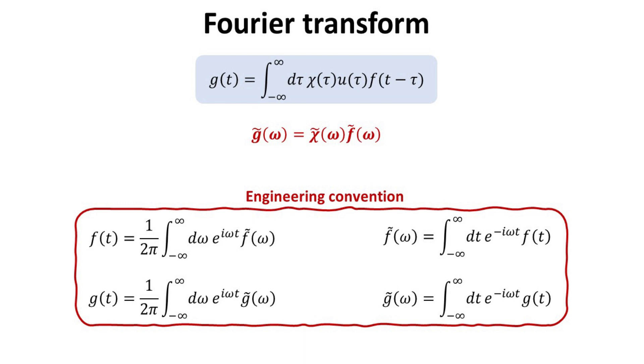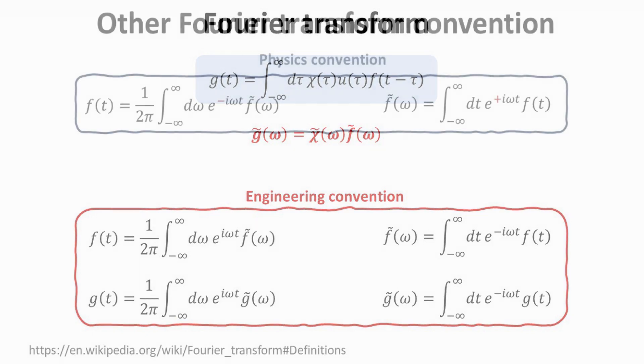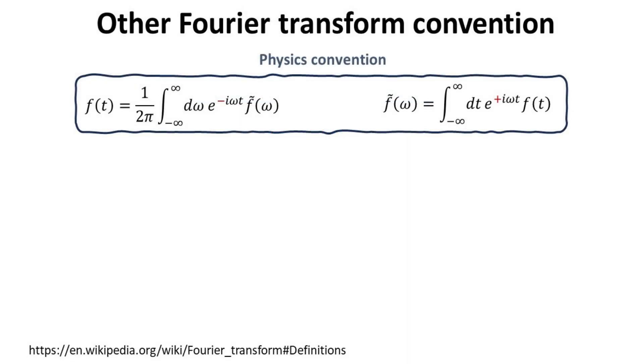Here in this video, we denote the Fourier transformed functions with a tilde, and their Fourier transformed pairs are defined as follows. We note, however, there are alternative definitions of the Fourier transform pairs. Common in physics, the sign of the exponent in the Fourier kernel is flipped. We call this the physics convention.